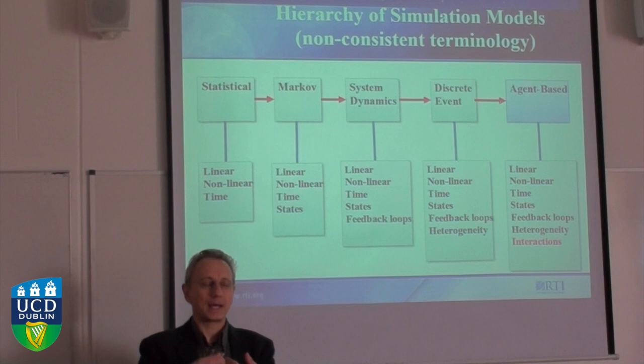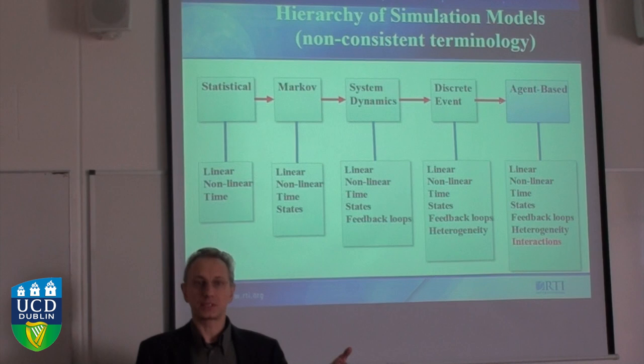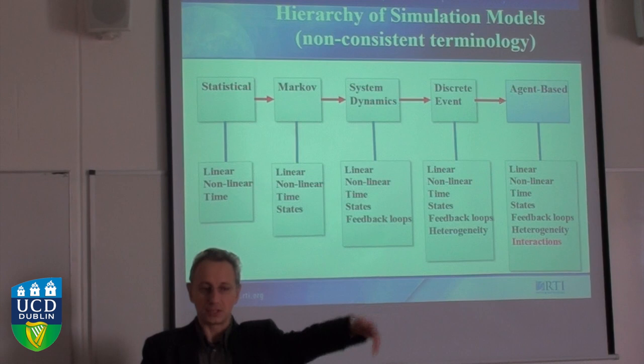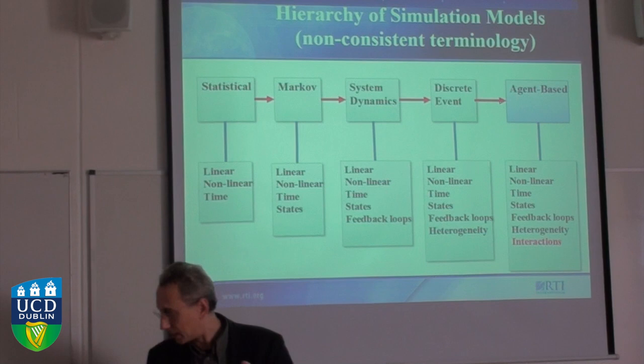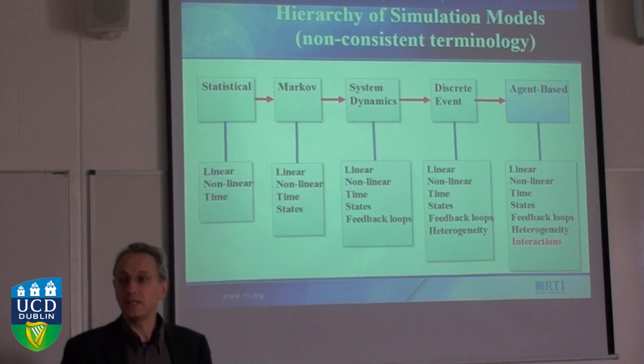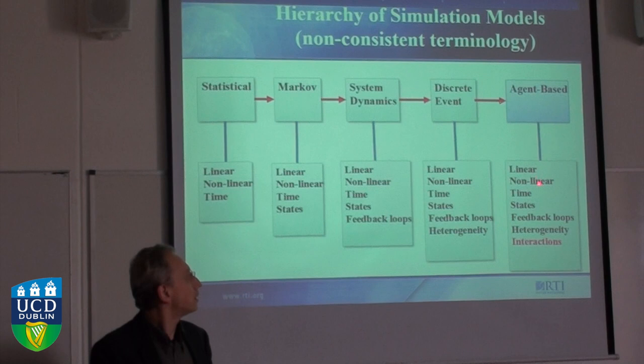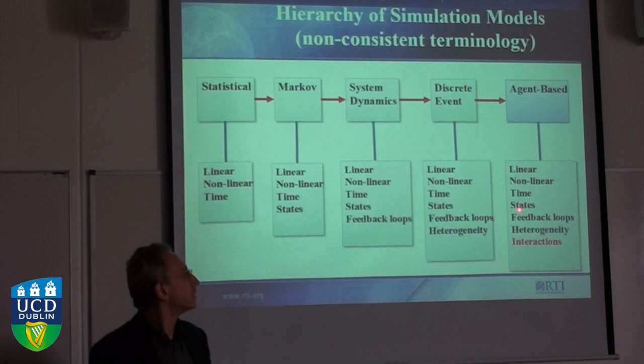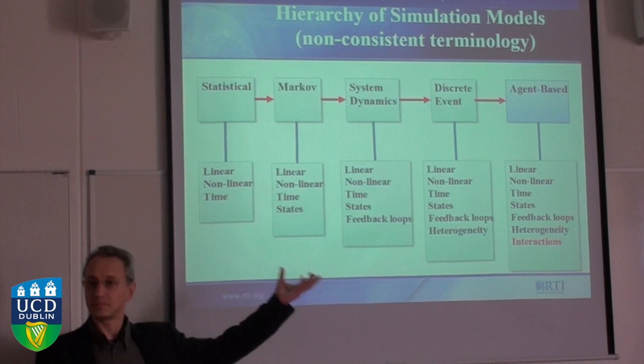One example: if you model a mail system, a letter is stamped, processed, and delivered — but the letter itself is passive. It doesn't look around and decide to move somewhere else. If you have these interactions between individuals, you need to build an agent-based model. Agent-based models can handle linear and non-linear events, states, feedback loops, and interactions — making it the most comprehensive tool that exists so far.